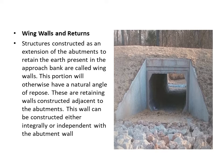Wing walls are angled structures constructed as an extension of the abutment. The function of the wing wall is to retain the earth present in the approach bank. The wing walls will have a natural angle of repose. These retaining walls are constructed adjacent to the abutment and can be considered either independently or integrally with the abutment walls.